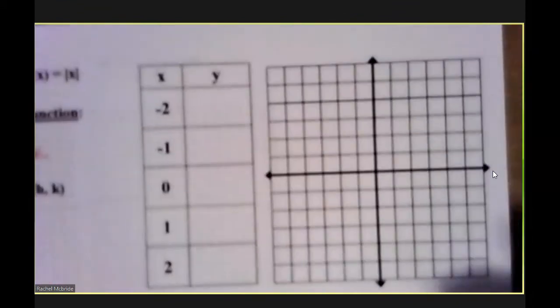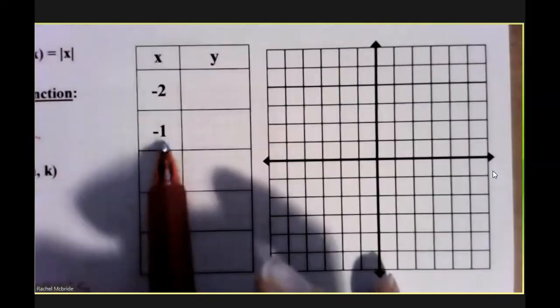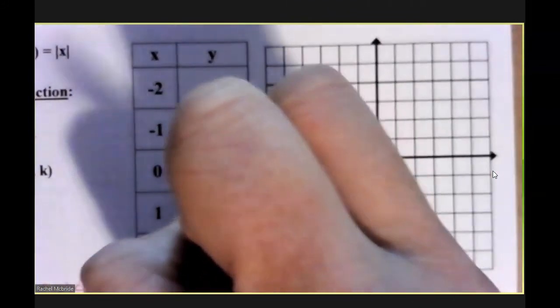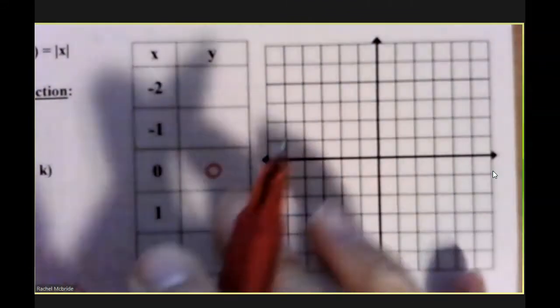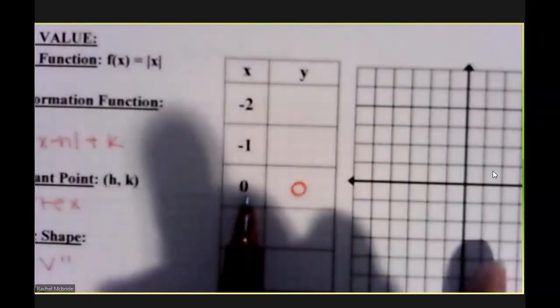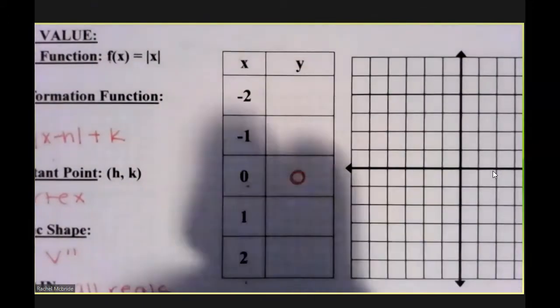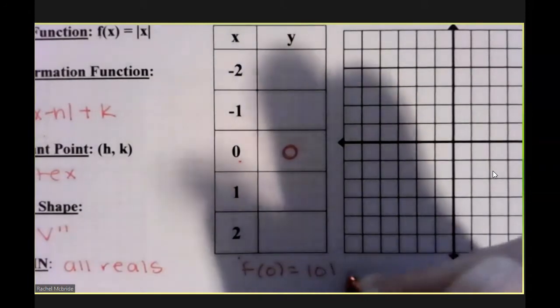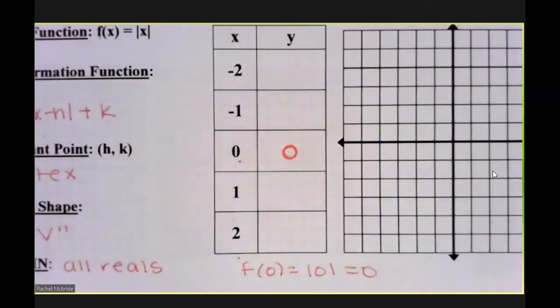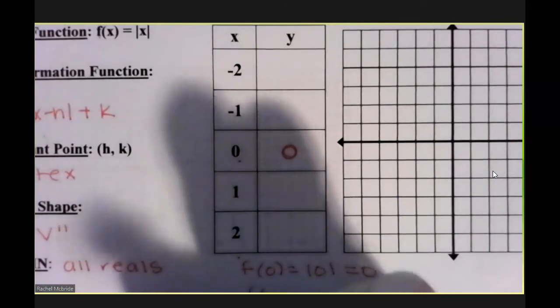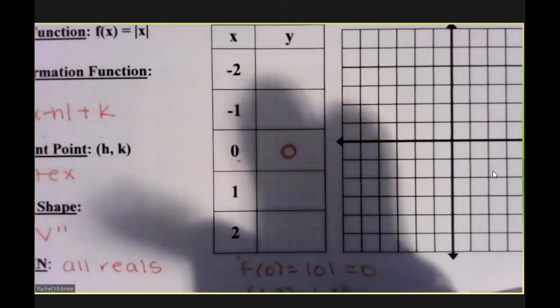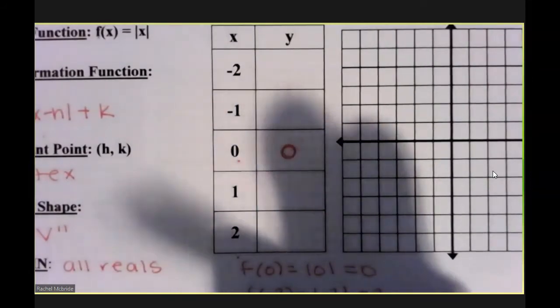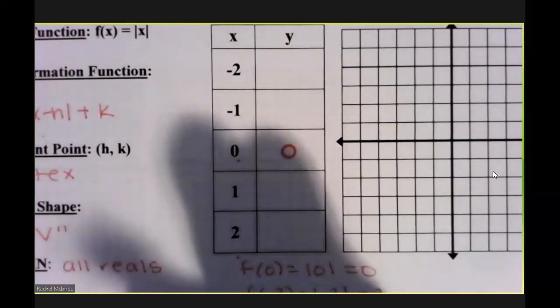Graphing the parent function, we have five key points. The vertex is always in the middle of my table. You can find your key points by plugging the x value into the equation. So this is kind of like saying f of 0. Well, f of 0 is the absolute value of 0, which is 0. f of negative 2 is the absolute value of negative 2, which is 2. And again, you could repeat that pattern for all key points.